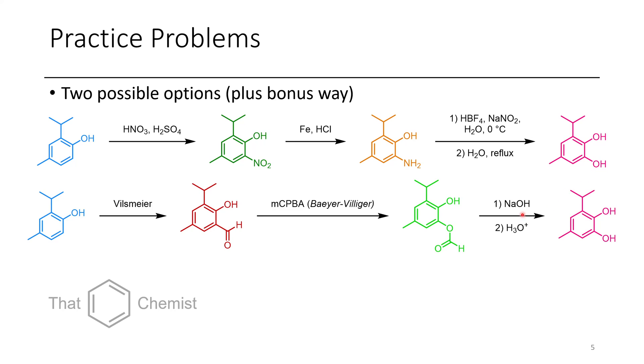Now an alternative approach would be to use the Vilsmeier. And so we can do a Vilsmeier addition to the ortho position. This is a phenol, so this should work fine. Then subsequently, we can do an MCPBA-mediated Baeyer-Villiger oxidation to give us this formate product, the formate ester. Now the formate can be easily hydrolyzed under very mild conditions with base and acid to reprotonate, and we'll get this as our product, the final catechol.